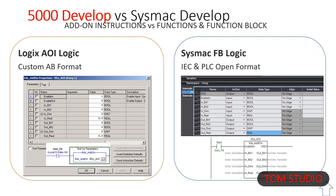IEC has definitions for function blocks, and Sysmac closely follows the standard — they even look like the examples in the IEC standards. It is much easier to see what the input and output variables need to be in Omron's IEC format. You can even hover over a parameter in the block to see the data type.